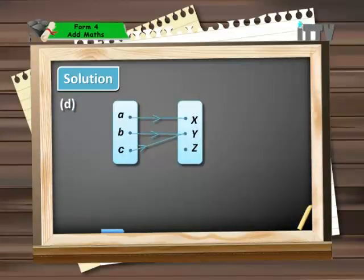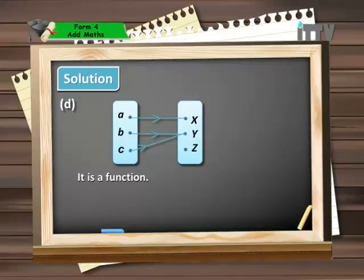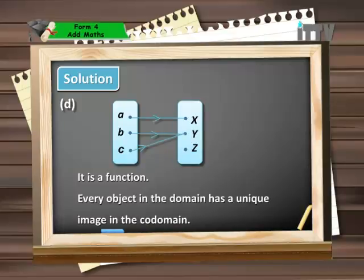For part D we have objects A, B and C which are mapped onto images X and Y, where B and C share the same image of Y, making it a many-to-one relation. This is a function because every object in the domain has a unique image in the co-domain. Although the value of Z in the co-domain has no object that it belongs to, nevertheless we still call this a function because each and every value of the objects in the domain have been accounted for.